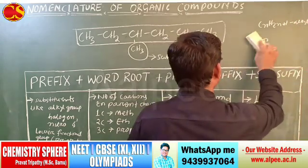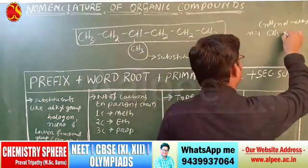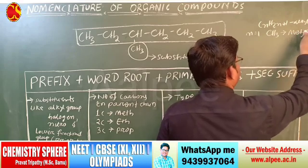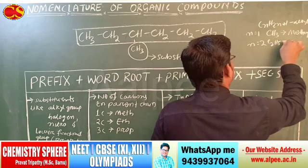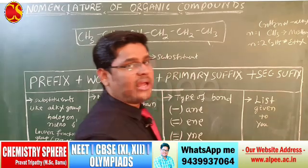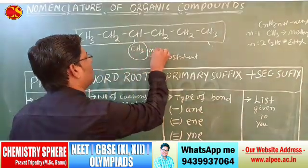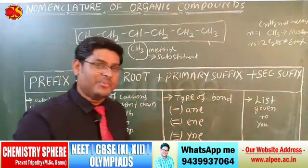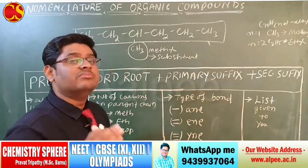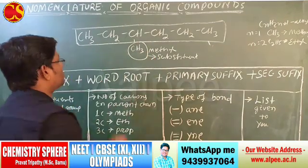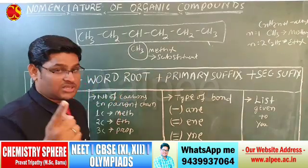The substituent here is methyl — CH₃, one member of the alkyl group. So the first principle is: select the longest carbon chain. The longest carbon chain is the parent chain, and everything apart from it is the substituent. The second rule: numbering is done in such a way that the substituent gets the minimum number. In this compound, numbering from one direction gives the substituent at position 3, and from the other direction at position 4. So the correct direction gives position 3 for the substituent methyl.